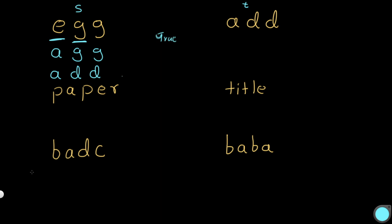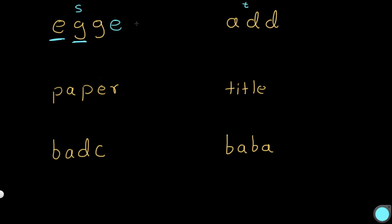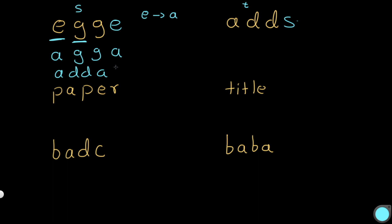Now let's add a small condition. Instead of the word 'egg' and 'add', let's use 'egge' and 'adds'. Let's check whether it's isomorphic. The e maps to a, so all e's map to a — this becomes an a. Then the g stays, so we get g and g. Now this last e also becomes an a. You can tell that's a problem — both of the e's have to map to the same letter. The g's become d's and we'd have 'adda', but 'adda' is not equal to 'adds'.